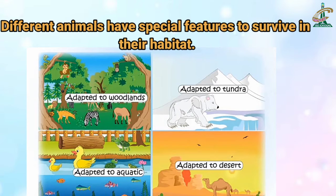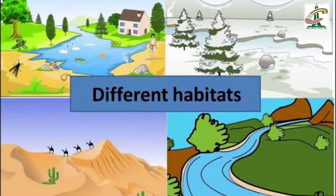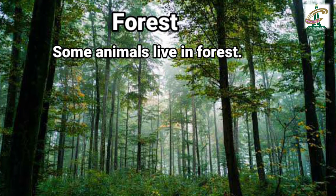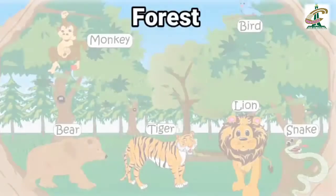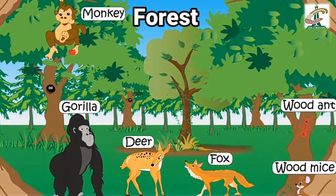Different animals have special features to survive in their habitat. کچھ animals بہت ٹھنڈی جگہ پہ رہتے ہیں، کچھ desert میں، اور کچھ پانی میں، تو وہ اسی حساب سے اپنے آپ کو adapt کر لیتے ہیں۔ Let's learn different habitats of some animals. Forest: some animals live in forest — monkey, bear, tiger, lion, bird, snake, gorilla, deer, fox, wood ant and wood mice. یہ animals forest میں رہتے ہیں تو یہ forest ان کی habitat کہلائے گی۔